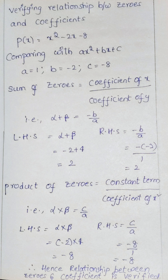Now let us verify the sum of the zeros. Alpha plus beta equals minus b by a. LHS: alpha plus beta equals 2. RHS: minus b by a equals minus of minus 2 by 1, which equals 2. From the above, the sum of zeros — LHS equals RHS. Verified.